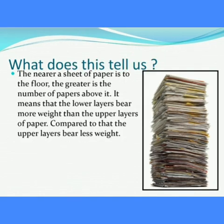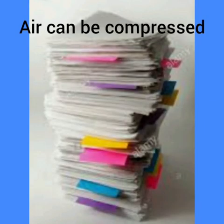The distance between the papers in the lower part of the pile becomes less while the papers in the upper part appear to be further apart. This tells us that the nearer a sheet of paper is to the floor, the greater is the number of papers above it. It means that the lower layers bear more weight than the upper layers. This tells us that air can be compressed.